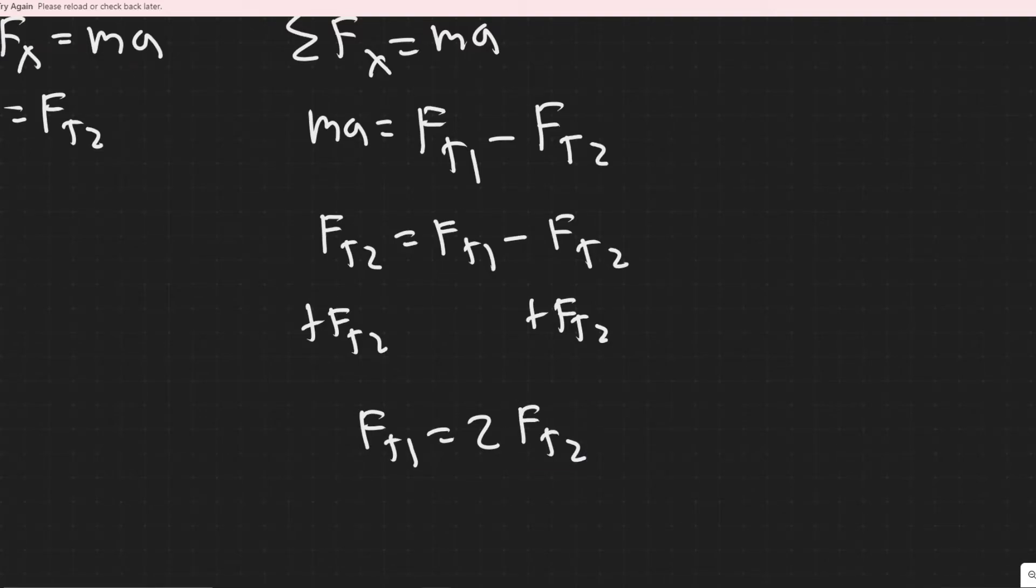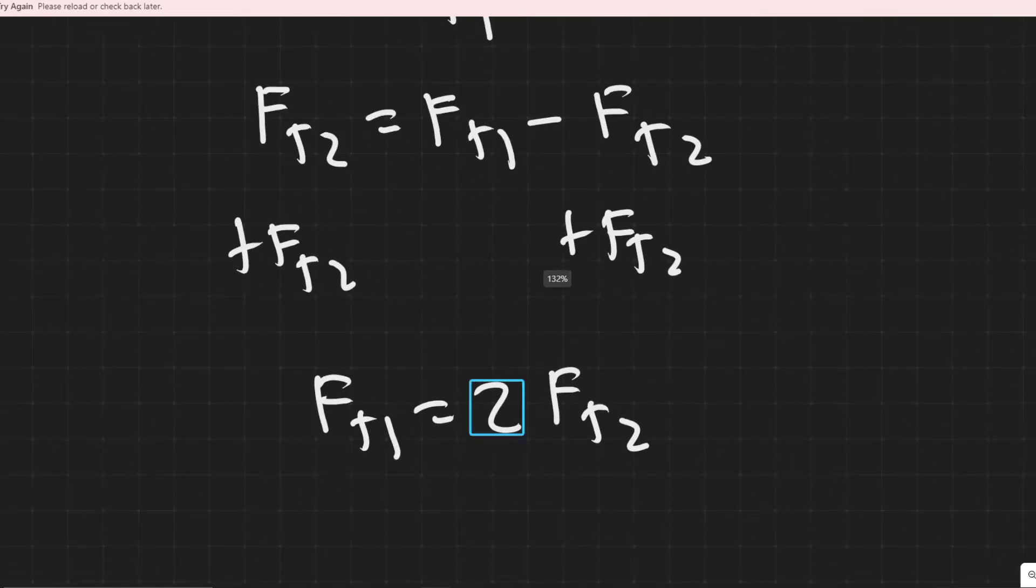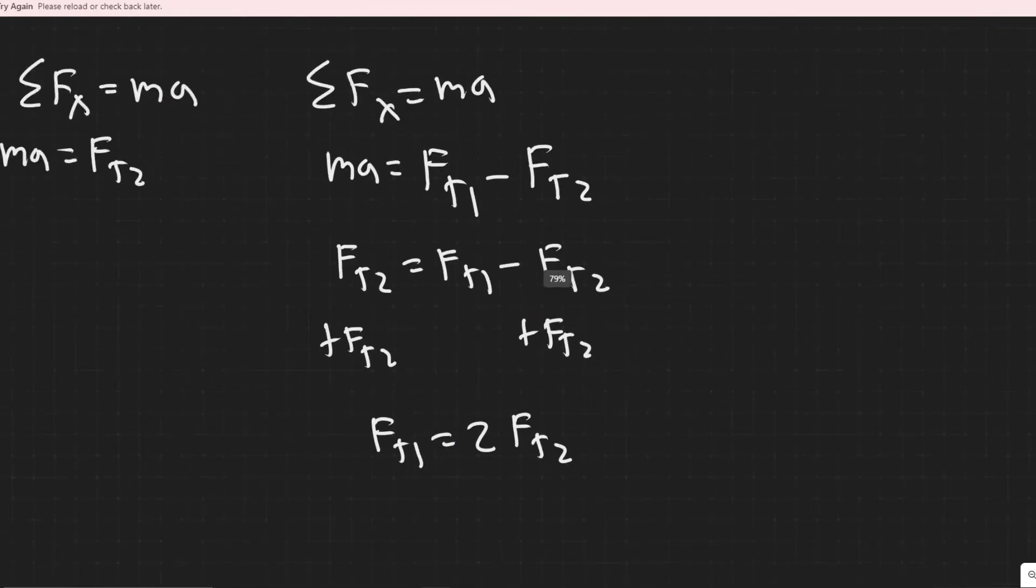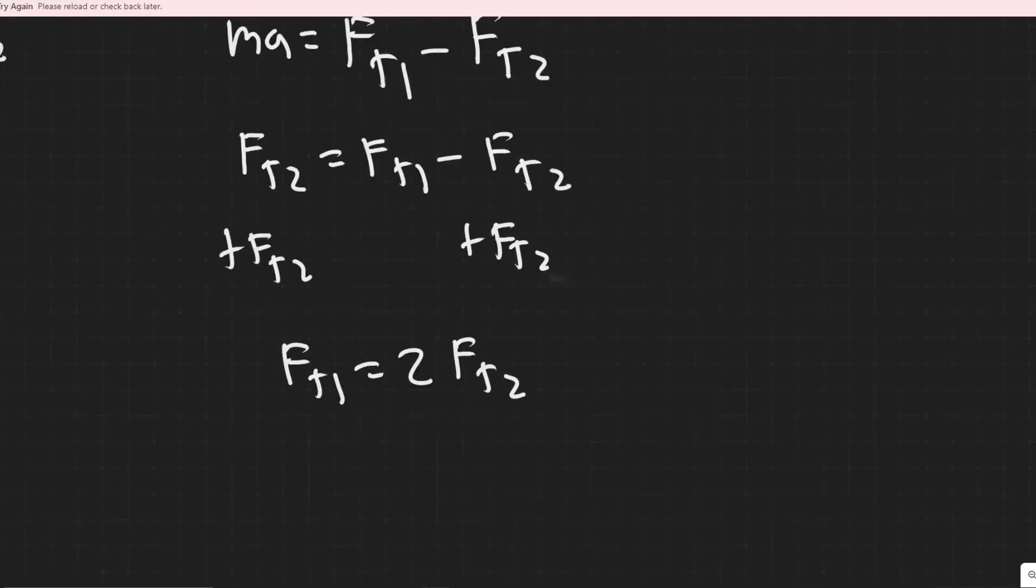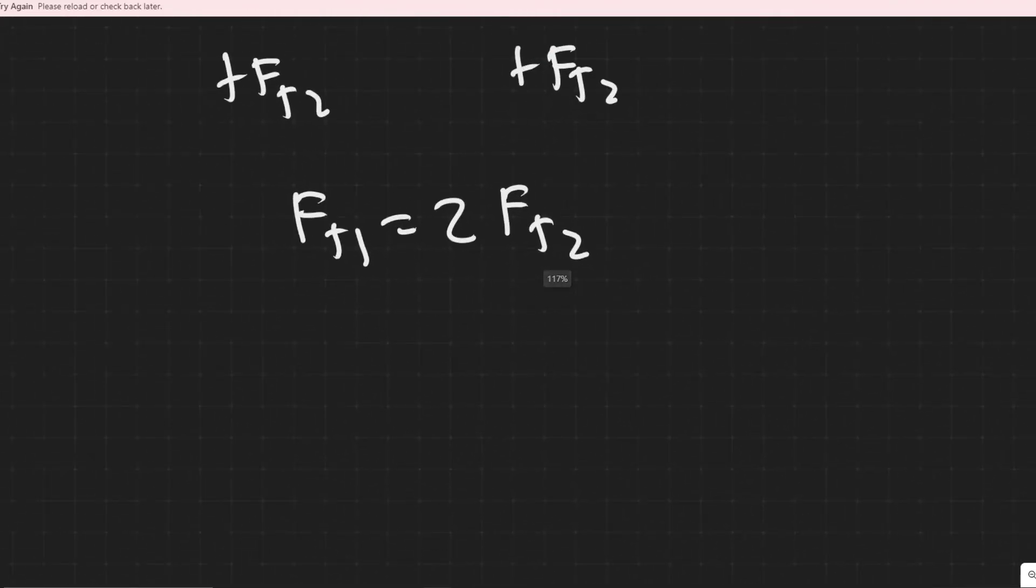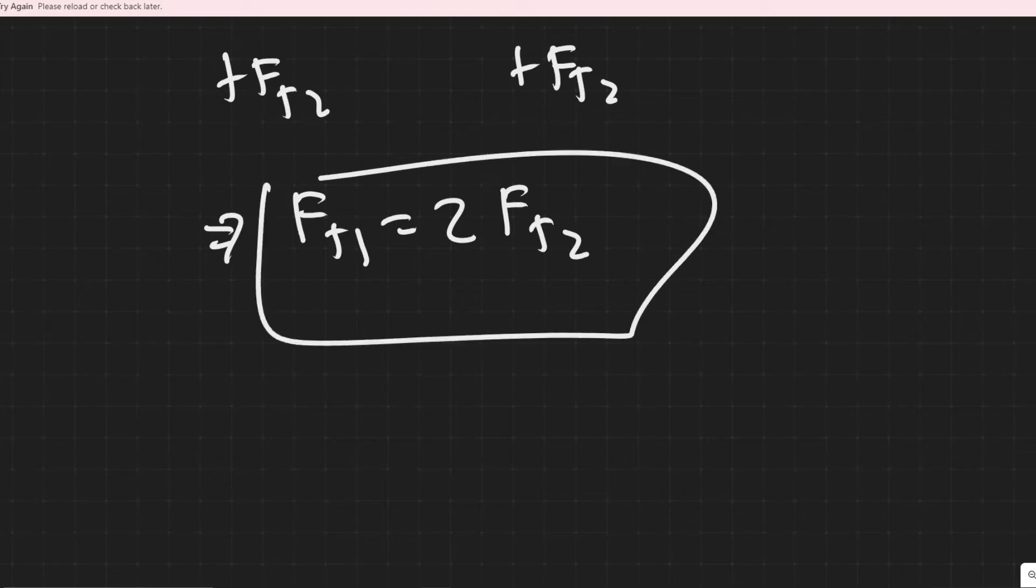So when they're asking to determine the ratio of the tension in the coupling between the locomotive and the first car to that of the second car, basically Ft1, or the tension here, is twice Ft2. So this right here is your answer. So this is the ratio.